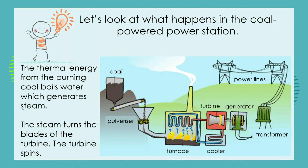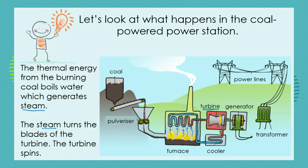The steam is going to turn the blades of a turbine. A turbine is a kind of machine that has blades on it that the steam can turn around. Have you ever seen one of those toy windmills? When you blow on it, the little blades turn and make the windmill spin around. That's exactly the same idea as what's happening inside the turbine — instead of blowing air, we've got steam causing the blades to turn, and the turbine spins around and around.